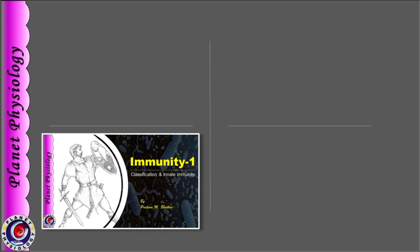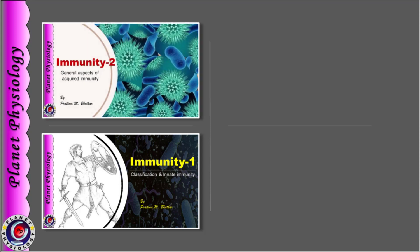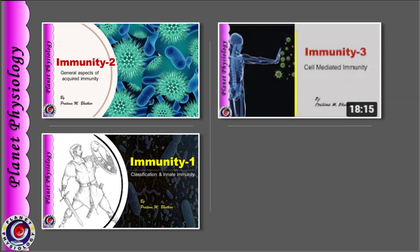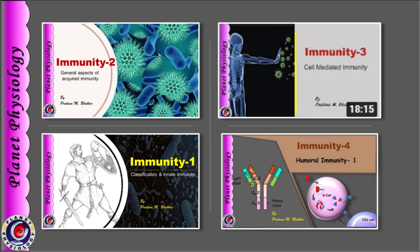Hello everyone. Welcome to the fourth session on immunity. In part 1, we have studied classification of immunity and details of innate immunity. The second part was on general aspects of acquired immunity and the third on cell-mediated immunity. In this part, we shall study humoral immunity, mainly the formation of antibodies, structure of antibody and types of antibodies. This is Pratima from Planet Physiology.